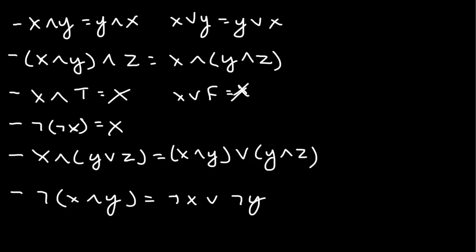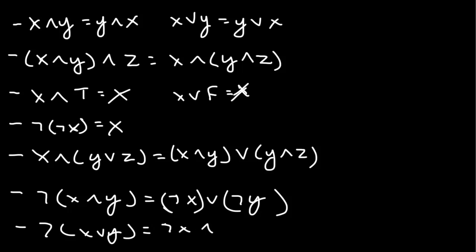And then this last equation — De Morgan's Law, something from computer science. If we have not (X and Y), that's equal to not X or not Y. And the same thing holds if we swap the operators: not (X or Y) equals not X and not Y. Those are just some properties to know for Boolean algebra in your discrete math class. Our motivation for wanting to know Boolean algebra is that we're dealing with statements that are true or false, and we want to know what happens when we combine them with 'or,' 'and,' or 'not.' Thank you for watching — I hope you learned something.